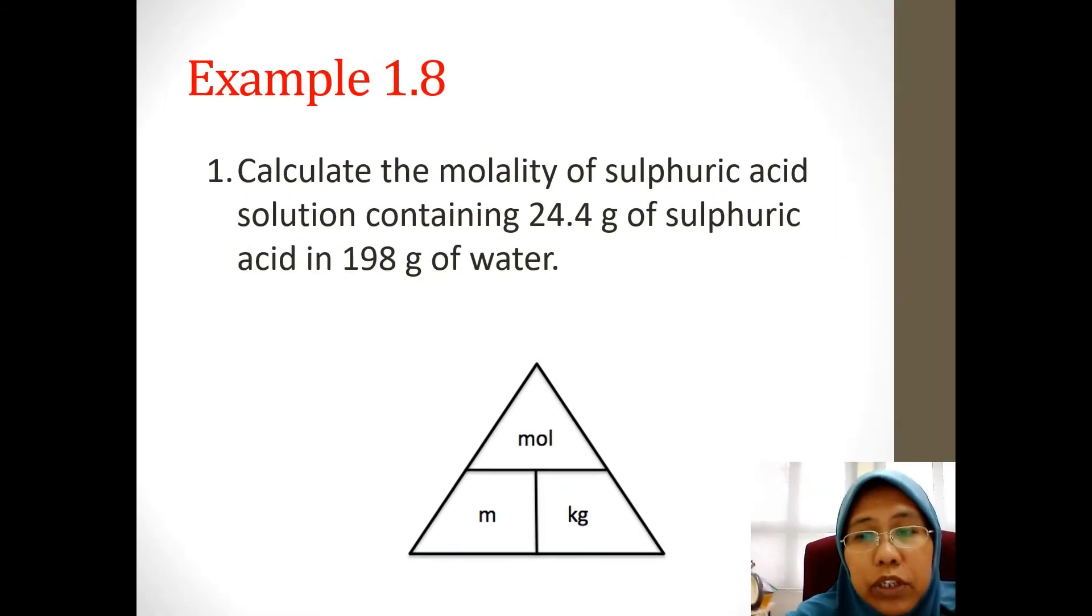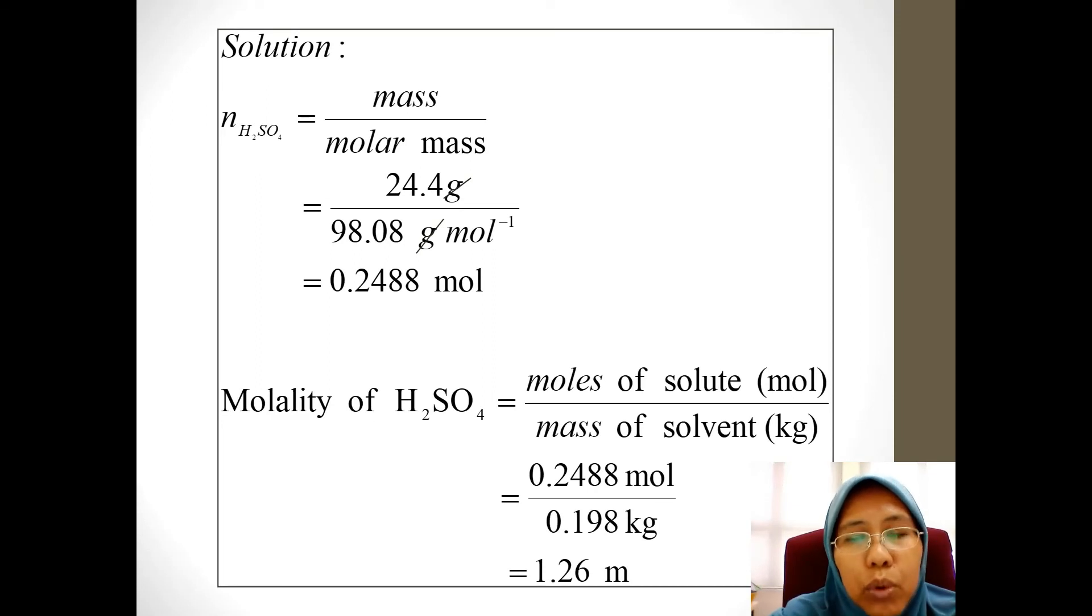Example 1.8, question 1: Calculate the molality of sulfuric acid solution containing 24.4 grams of sulfuric acid in 198 grams of water. You need to find the number of moles of the solute. The solute is sulfuric acid. 24.4 divided by the molar mass of the sulfuric acid, we get 0.2488 moles, and this number of moles will be divided with the mass of solvent given, which is 0.198 kilograms. Remember to convert the unit from grams to kilograms, and then we will get the final answer 1.26 molal.